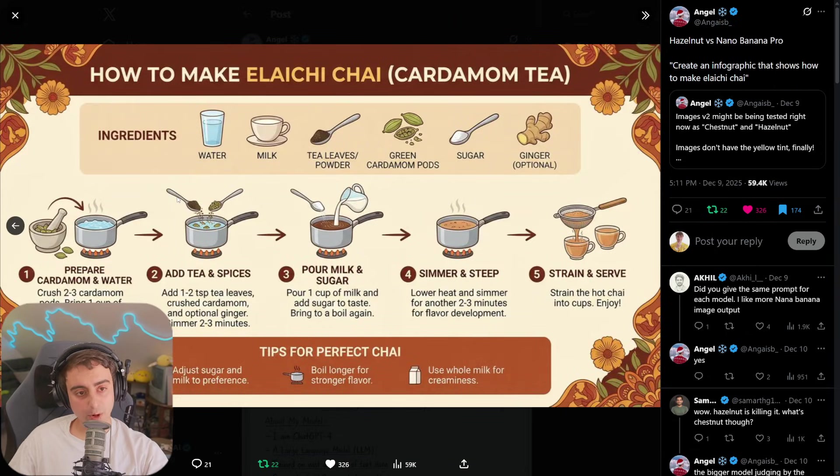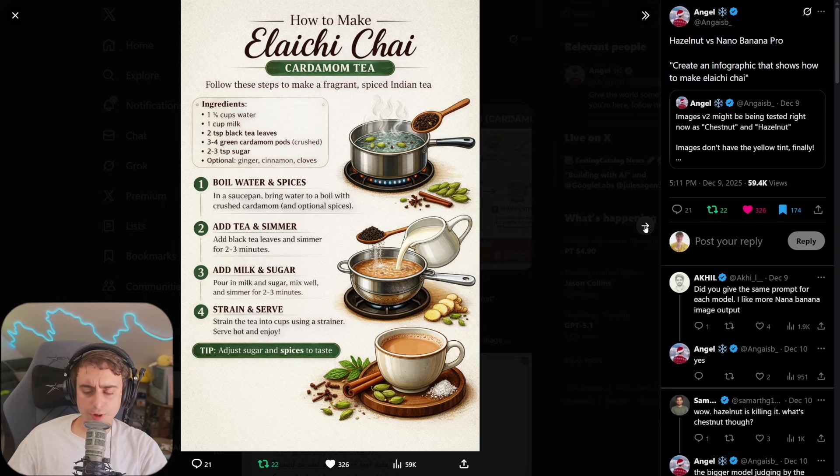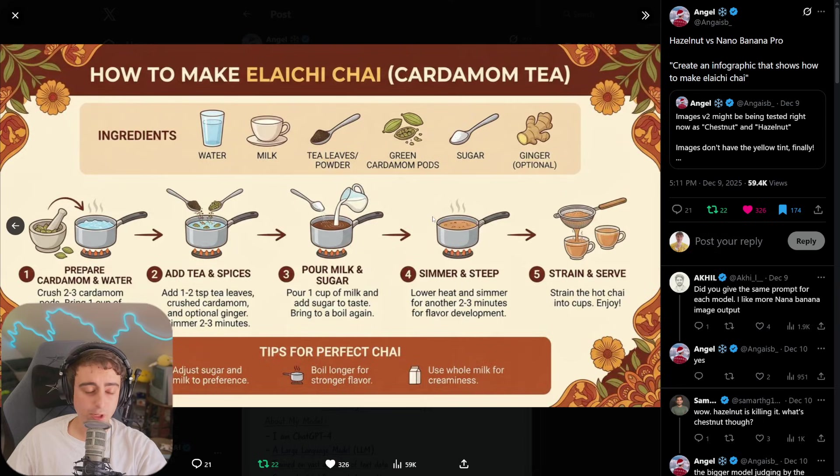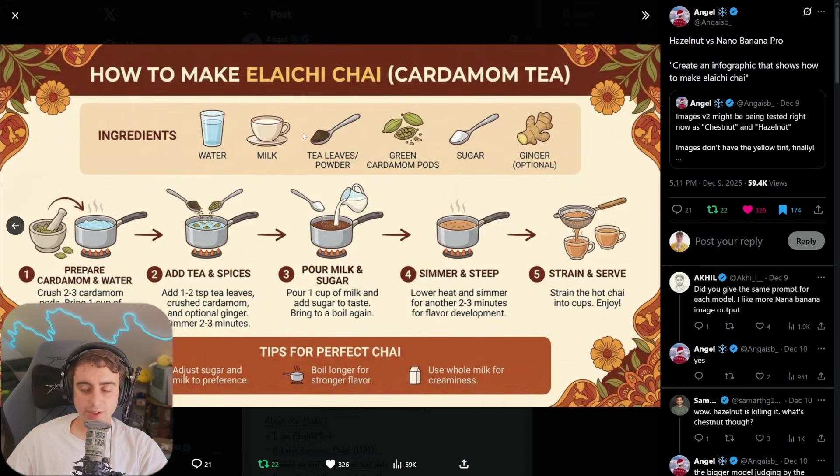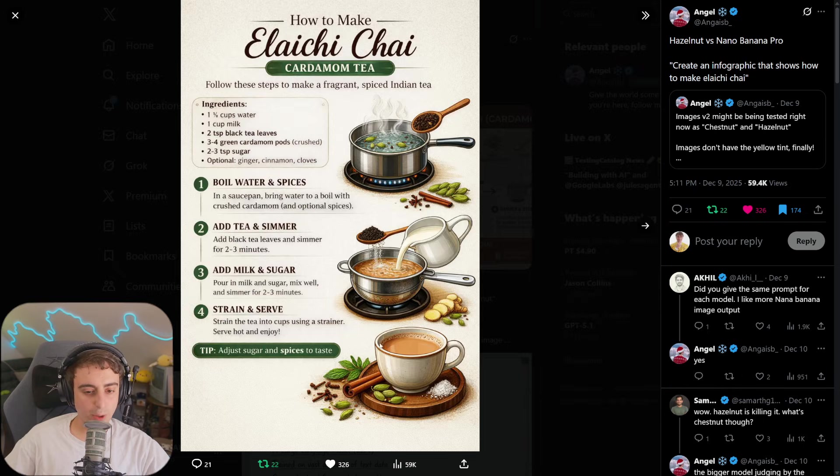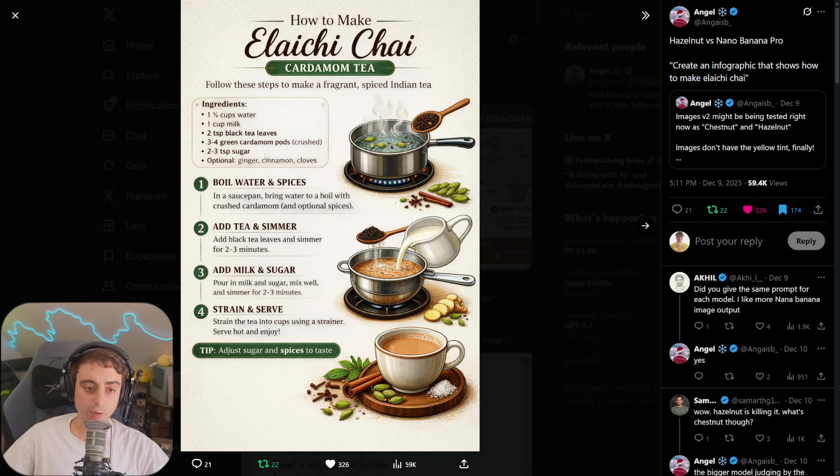This right here is Nano Banana Pro with the same prompt. Some things I'm noticing right off the bat comparing GPT Image 2 and Nano Banana Pro. Nano Banana Pro, I think, is a little bit simpler on the ingredient side. Chat GPT did offer cinnamon and cloves. You don't see that on the ingredients list here for Nano Banana Pro. But everything is listed as a photo and text. Even all of the individual instructions have their own unique photo showing you what part of the process is actually being conducted.